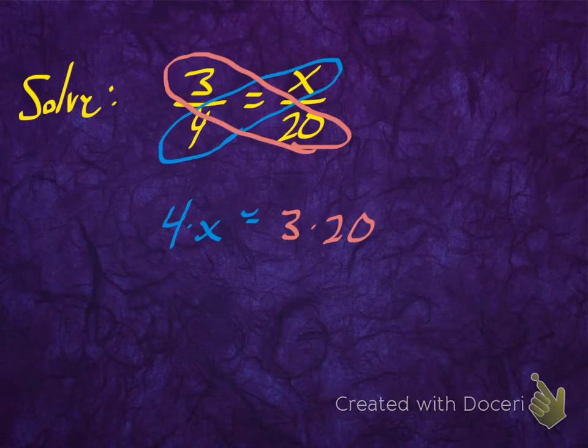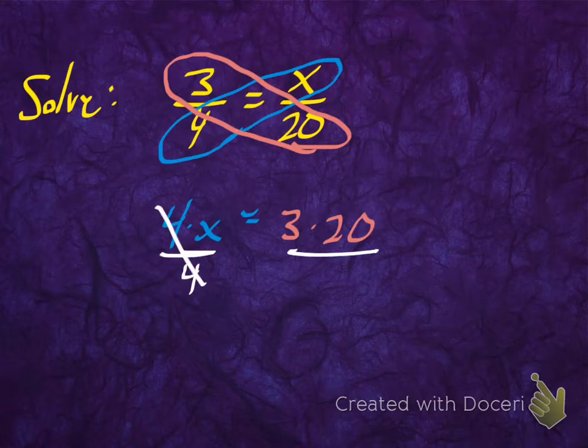Now to solve this, to finish this, we're not solved because we still don't know what x is, so we have to get rid of that 4. So 4 times x, the opposite of multiplying by 4 is to divide by 4. And if I do it on this side it'll cancel out nicely, but I've also got to do it on this side.